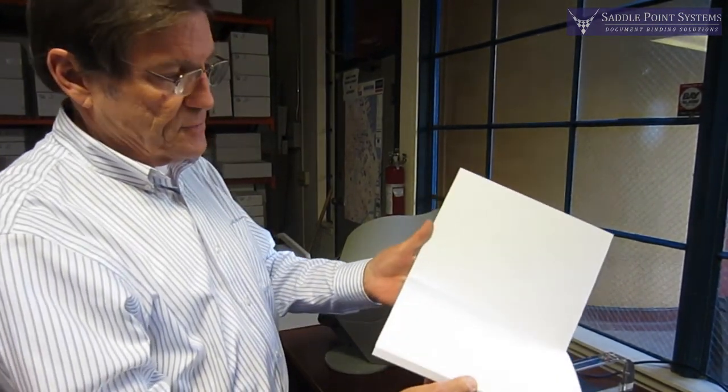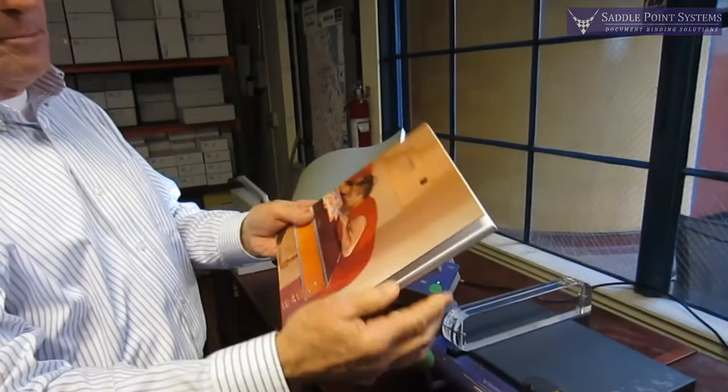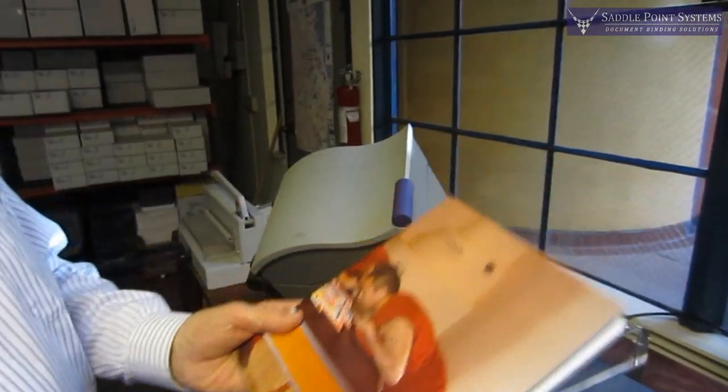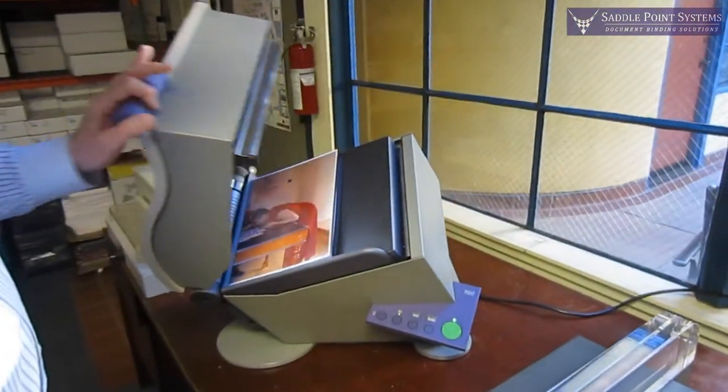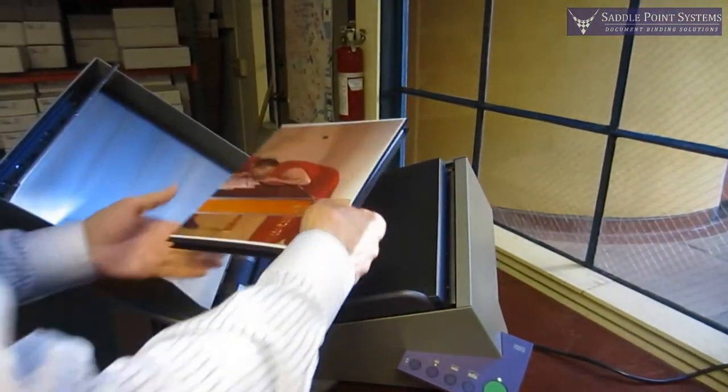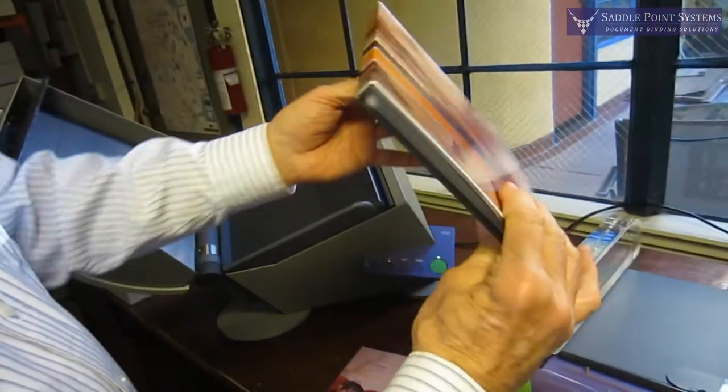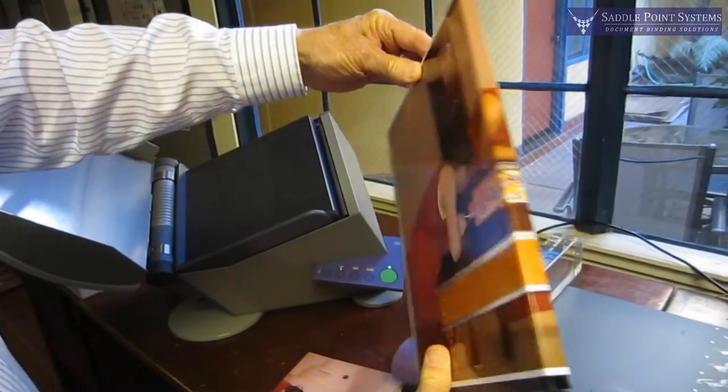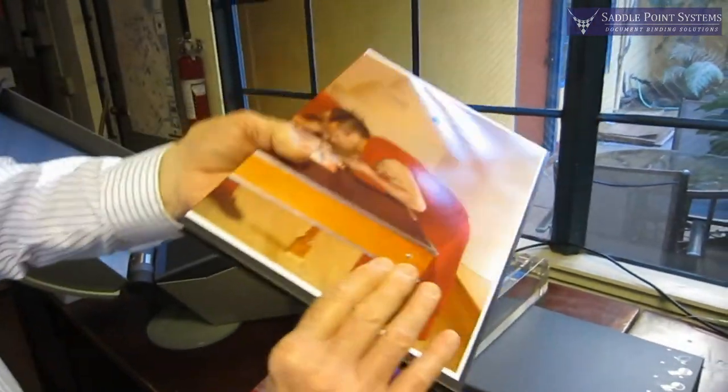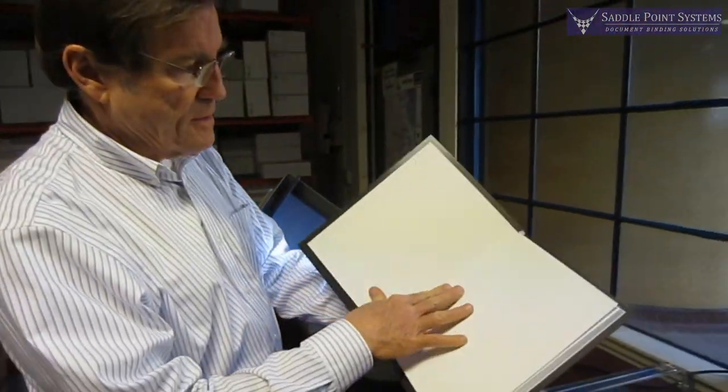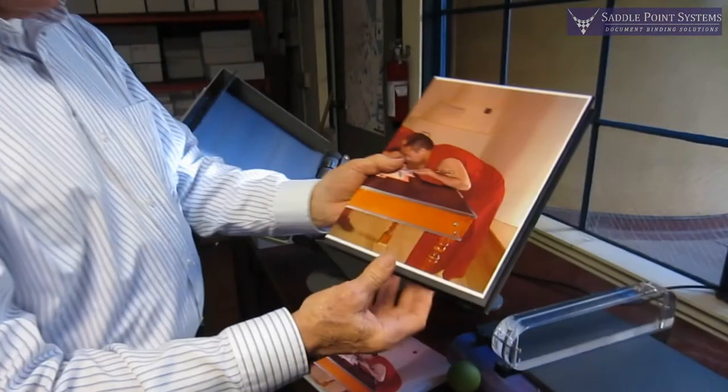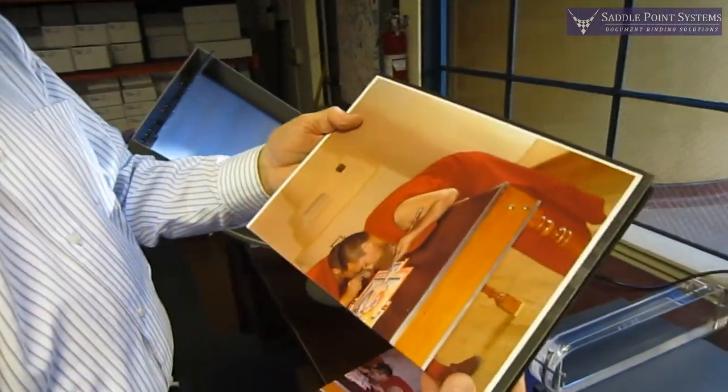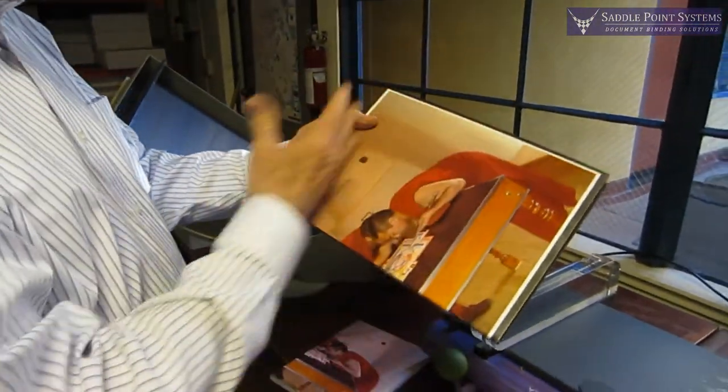After it's done, this was done with a three knife trim to trim it out. So now that's ready. There's our book. You can see it's really just gorgeous. And so all we do now is take it over to a cutter and do a three knife trim.